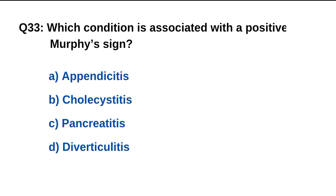Question number 33. Which condition is associated with a positive Murphy's sign? The right option is B: Cholecystitis.